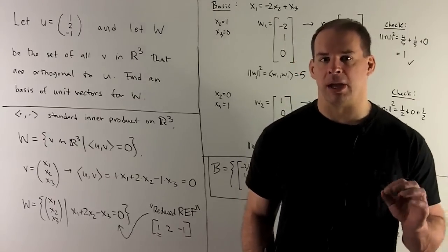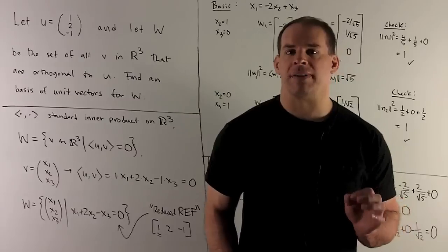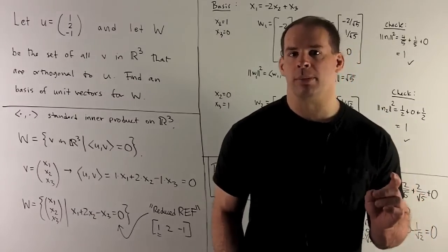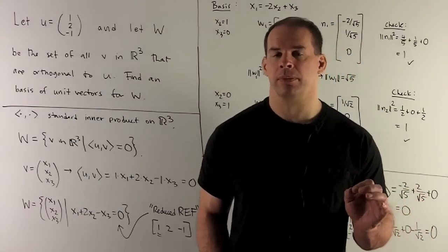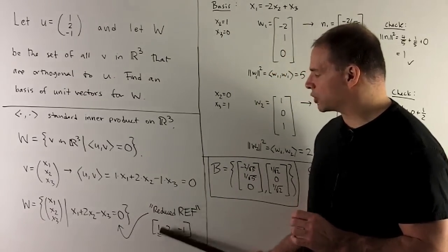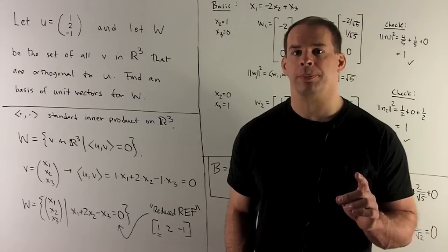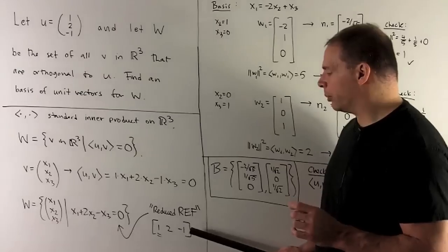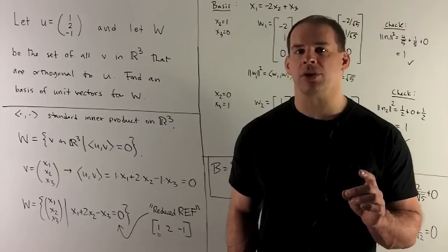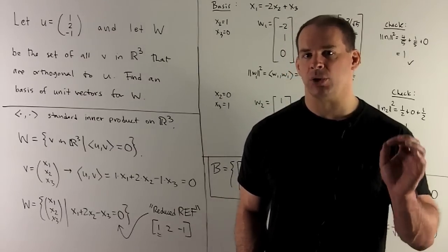Moving to matrix form, we have the row matrix [1, 2, -1], and we're finding the null space of this matrix. It's already in reduced row echelon form, so we only need to interpret. The pivot column is the first one, corresponding to variable X1, making it the dependent variable. X2 and X3 have no pivots in their columns, so they are the independent variables. We'll have a basis with two dimensions — two basis vectors.